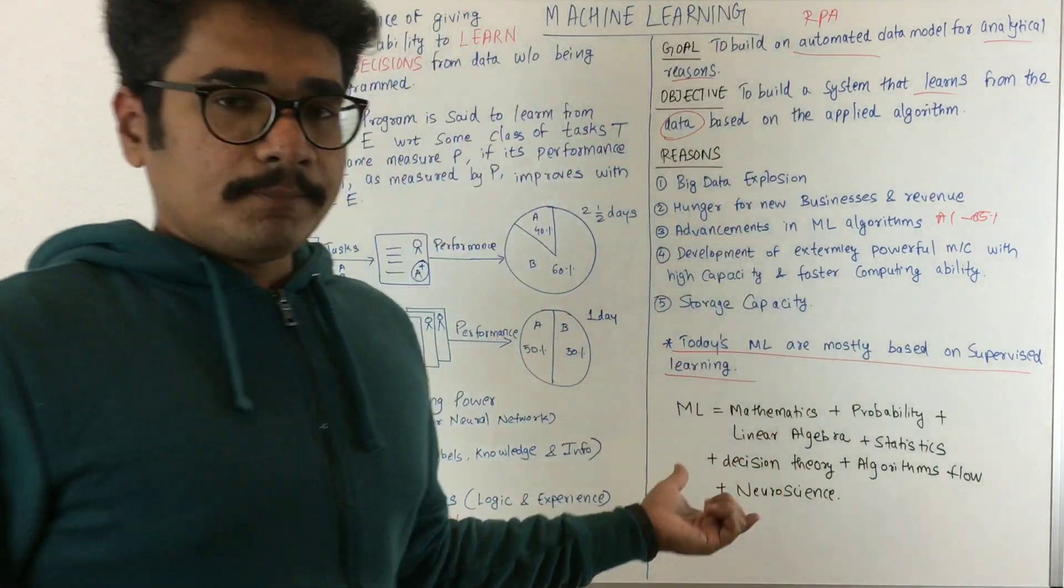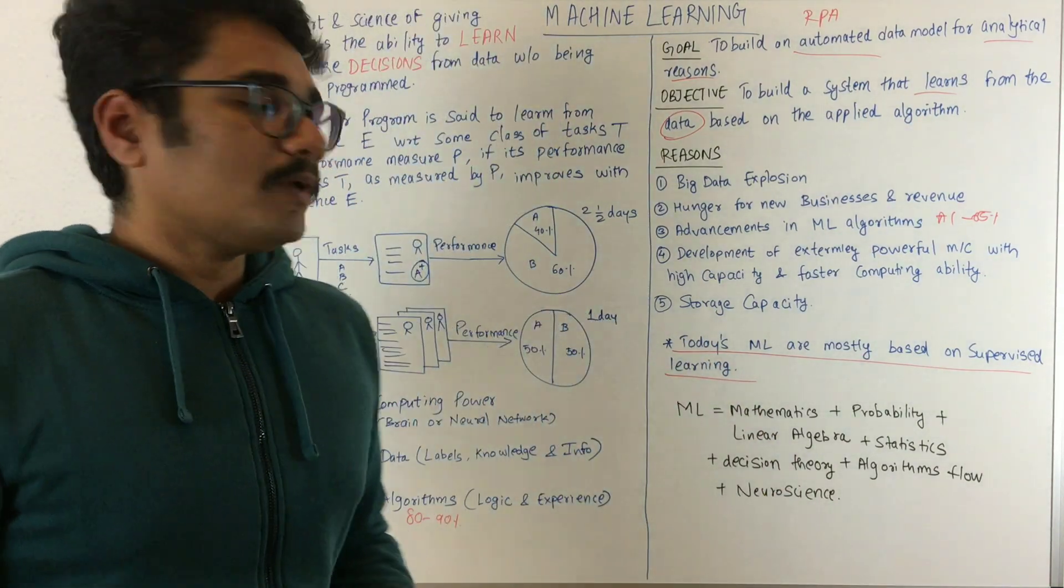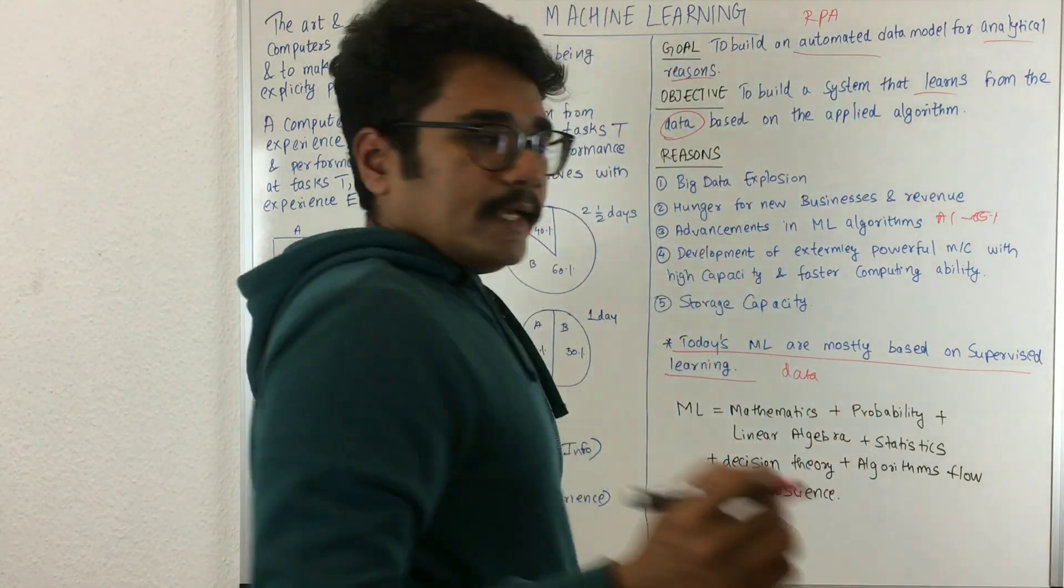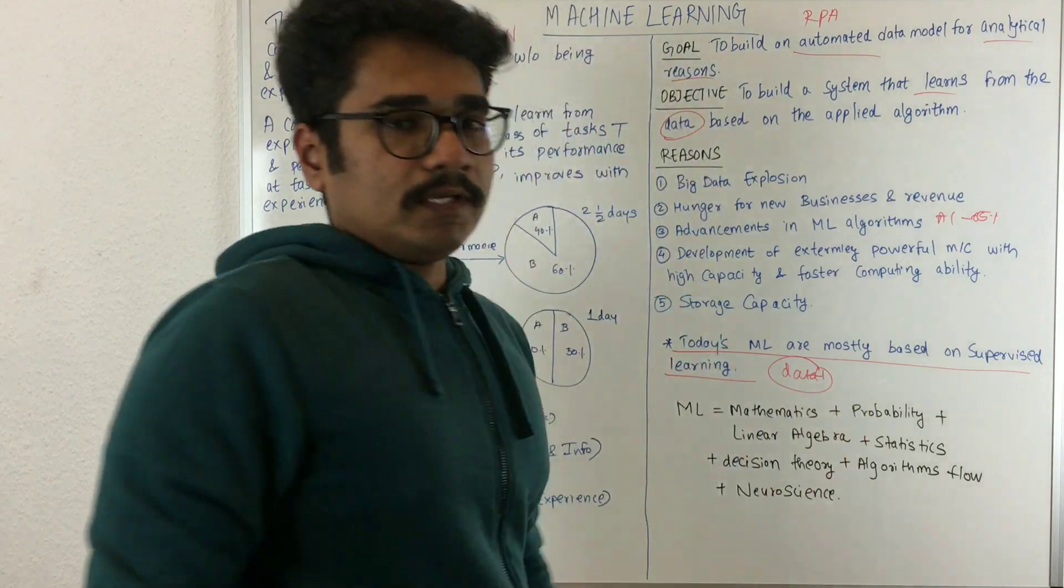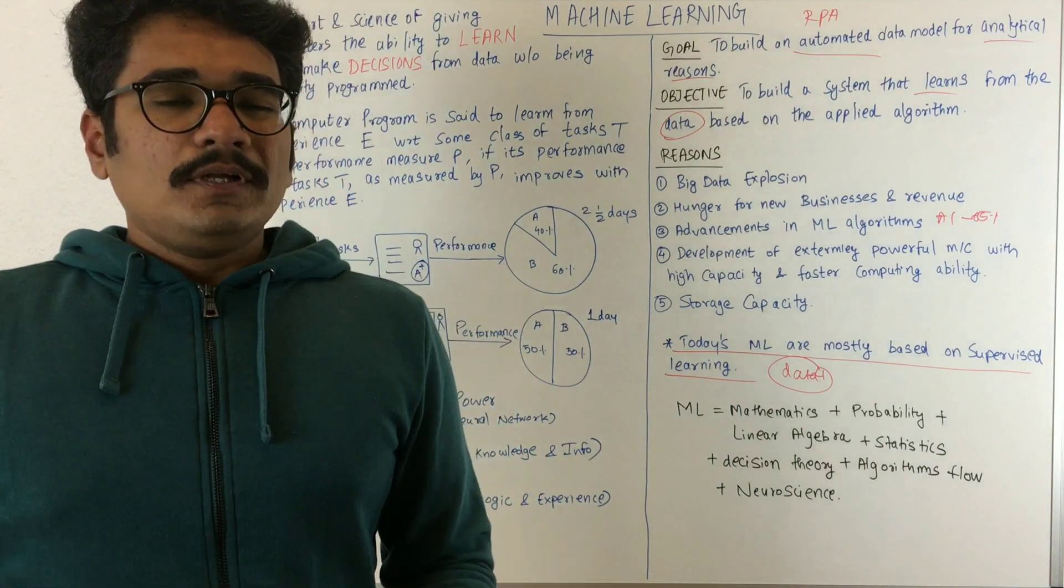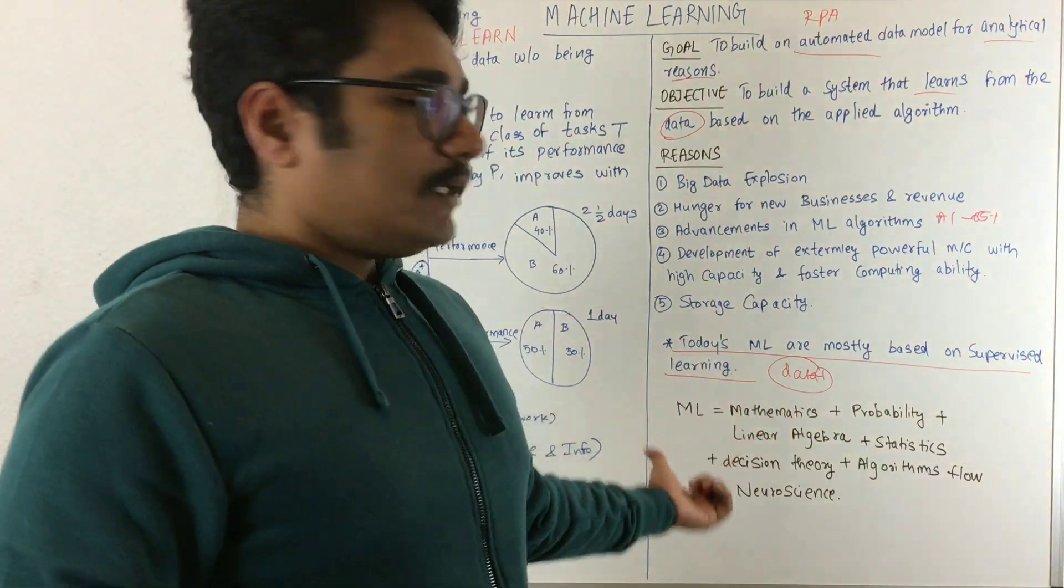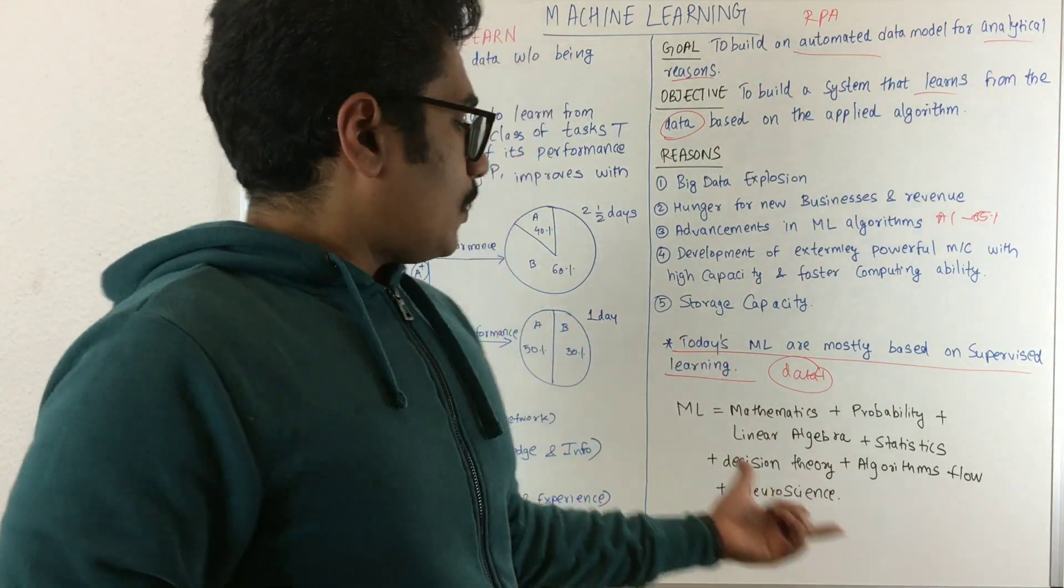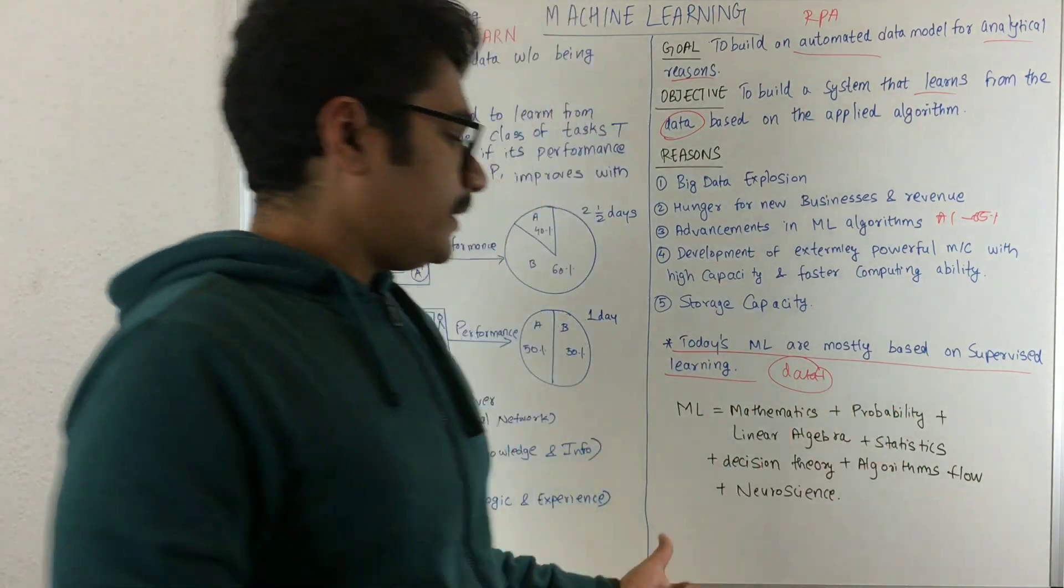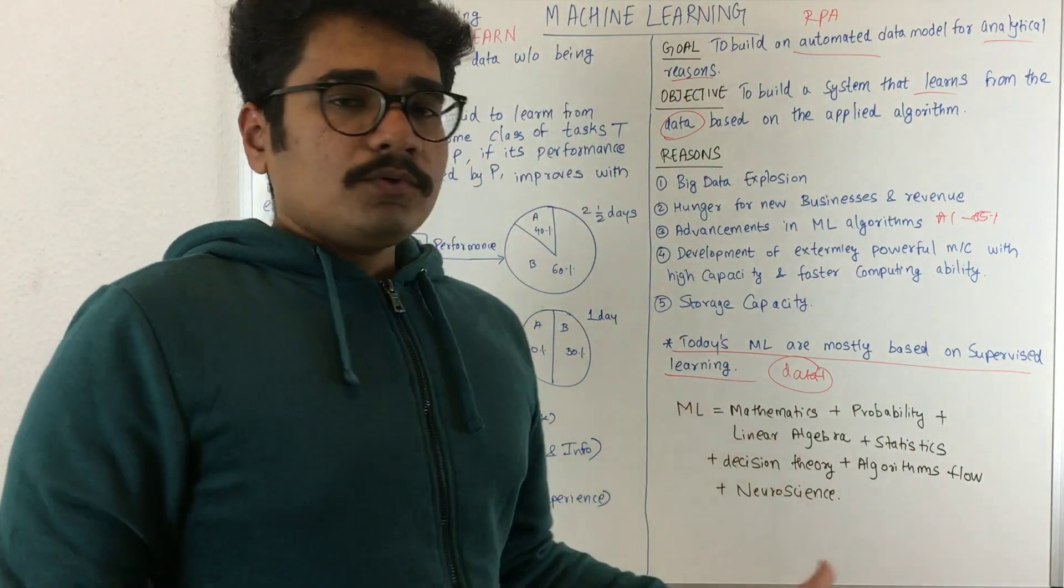The main thing is the machine learning we're doing today is mostly based on supervised learning. Supervised means we have certain data, and on this data we put labels—L1, L2, L3—then we classify the models or build certain data based on it. Machine learning is comprised of many branches: mathematics, probability, linear algebra, statistics, decision theory, set theory, set notations, and algorithms flow.